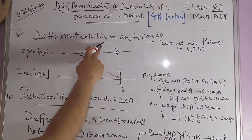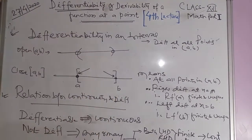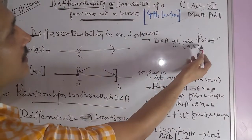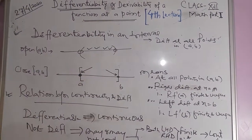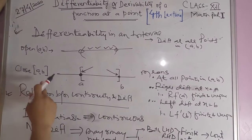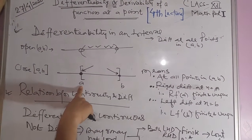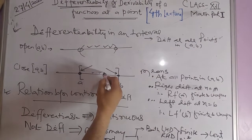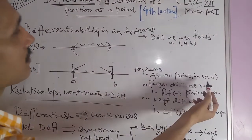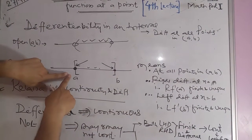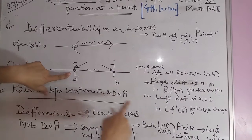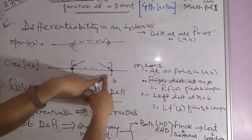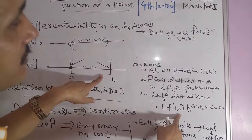Differentiability in an interval: for an open interval (a, b), the function must be differentiable at all points in (a, b). For a closed interval [a, b], the function must have a right-hand derivative at a (finite and unique), a left-hand derivative at b (finite and unique), and be differentiable at all intermediate points.